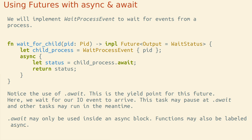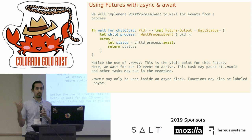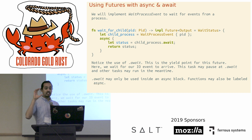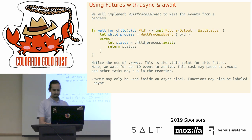Notice the .await keyword — that's something just added to Rust. This is the yield point: we wait for an I/O event to arrive, the computation is paused and saved, and another future runs in the meantime. Eventually our event comes and we return to running our code from exactly that point. If you're familiar with generators in Python, it's a similar idea of being able to pause a function and later return to where we were.